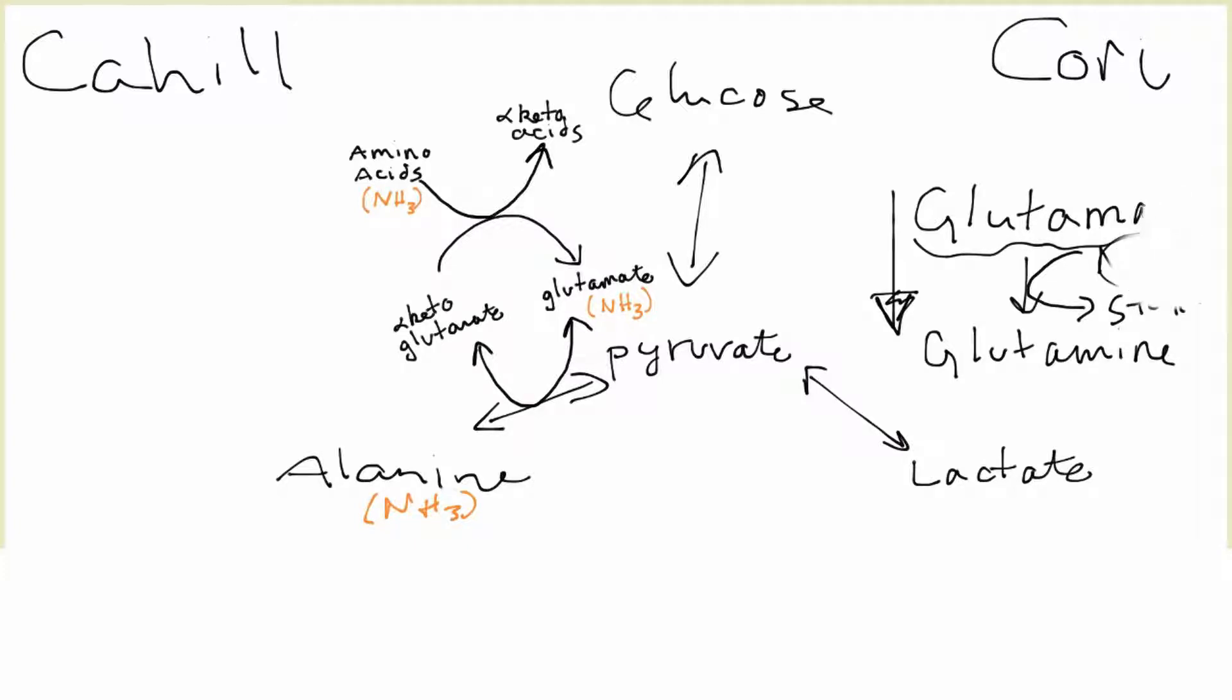Let me get rid of this so you don't confuse this with the Cory cycle. Similarly, it says that you deplete alpha-ketoglutarate. Remember that alpha-ketoglutarate is an important metabolite in the citric acid cycle, so if you don't have a lot of that hanging around, the citric acid cycle is not going to work.